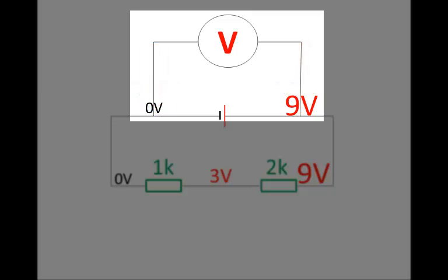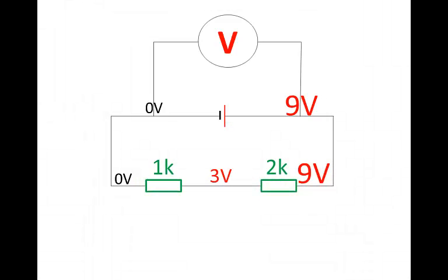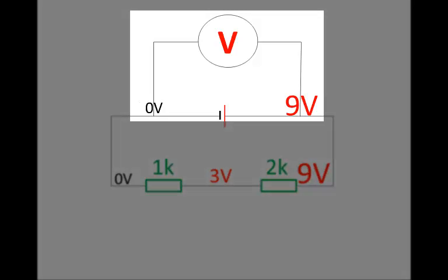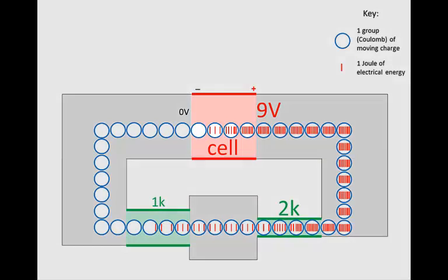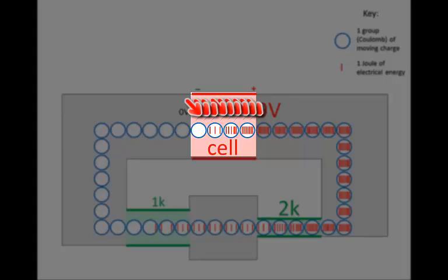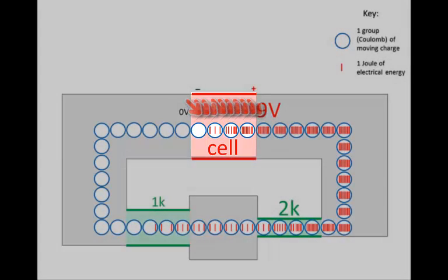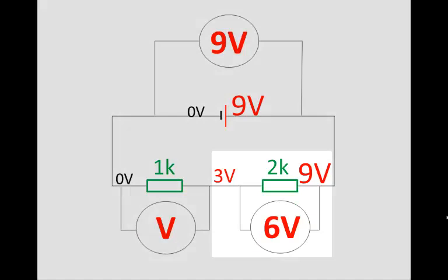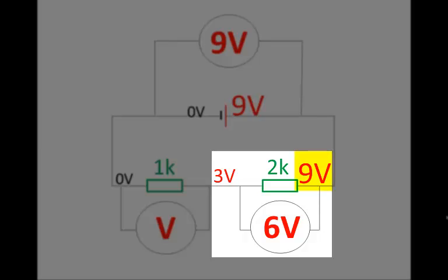That's why it's also called the potential difference — you can call it the voltage across a component or the potential difference across a component. If we place a voltmeter in parallel across the cell, with 0 volts at the negative terminal and 9 volts at the positive terminal, it reads the difference: 9 minus 0 equals 9 volts. If we connect a voltmeter across the 2K resistor, it feels 9 volts at one point and 3 volts at the other — 9 minus 3 equals 6 — so the voltmeter reads 6 volts.